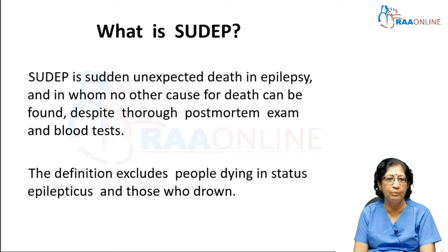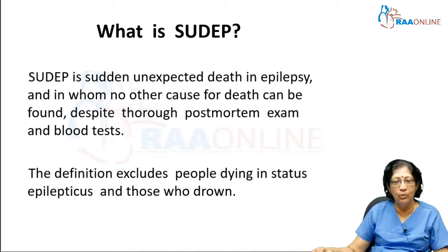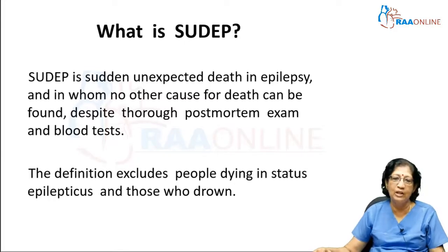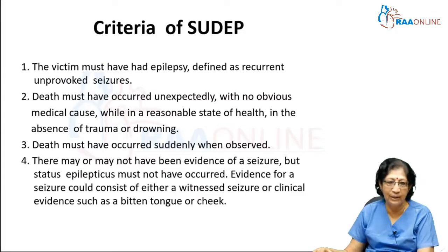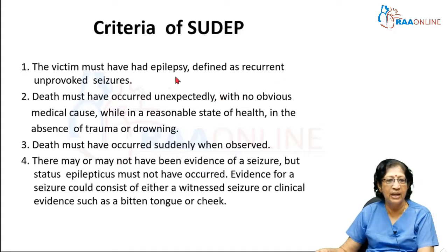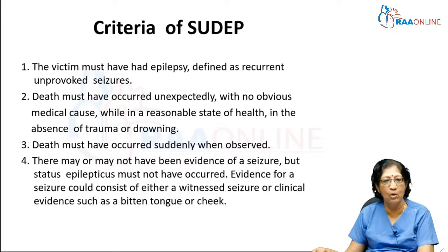This definition is very important — despite postmortem examination and blood test. This definition will exclude those people who are dying because of status epilepticus or who have a seizure and drown. Those are excluded. The criteria for SUDEP state that the victim must have had epilepsy, defined as recurrent unprovoked seizures, and death should have occurred unexpectedly with no other obvious medical cause, when the patient was in a reasonably good state of health, in the absence of trauma or drowning.